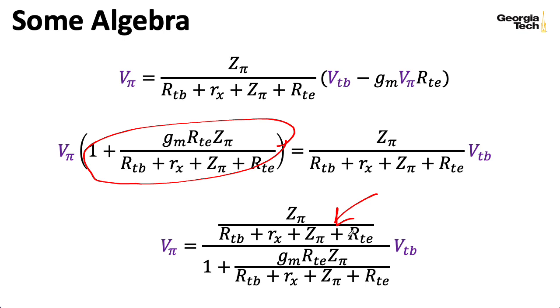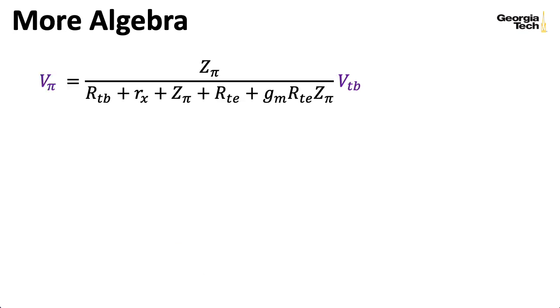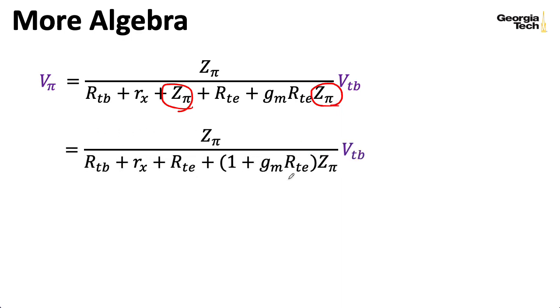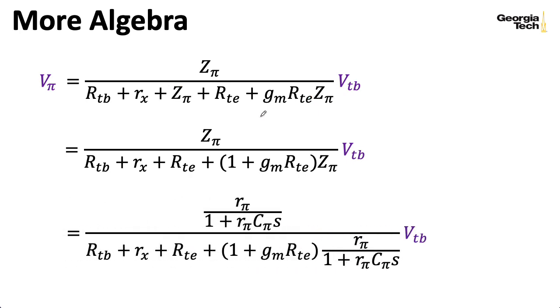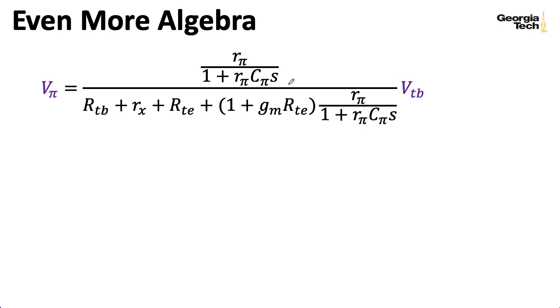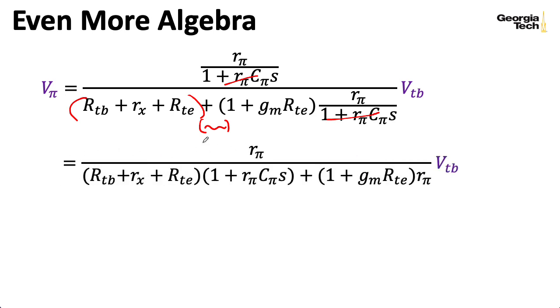So to clear the fraction, I'll multiply the numerator and the denominator by this RTb plus Rx plus Zpi plus Rte factor here. So that kind of expression will go away here and it will replace the one sitting here, giving me an expression that looks like this. And let's see, I have a Zpi here and a Zpi here. So I can group those together and factor out a Zpi to write it like this. And at this point, I want to go ahead and fill in the expression for Zpi. So that's something we calculated on the previous slide. All right. So the next obvious thing I need to do is multiply the numerator and the denominator by this one plus Rpi cpi s term to clear that out. And when you do, these factors go away and you wind up with the same factor multiplying this mess of resistances here to give you an expression that looks like this.